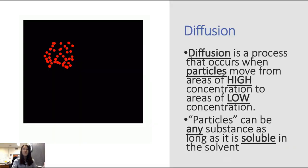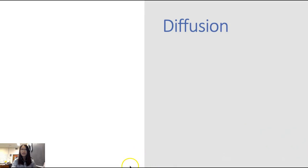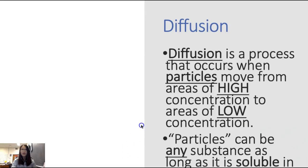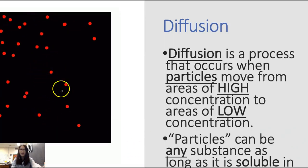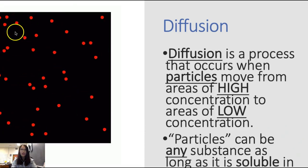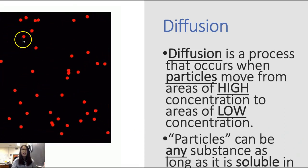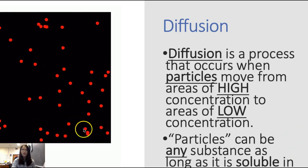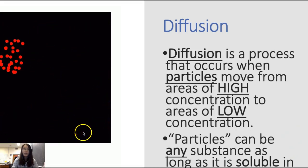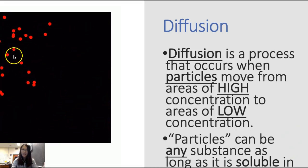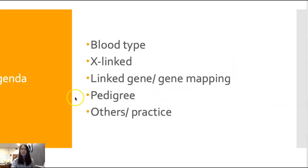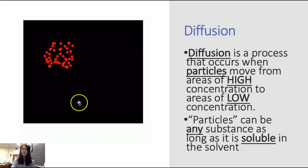Our first word that you need to know is diffusion. Diffusion is a process that occurs when particles move from areas of high concentration to low concentration. If you look at this diagram, the particles started off at a high concentration area and then they moved to an area of lower concentration — high concentration to low concentration. That is something called diffusion.